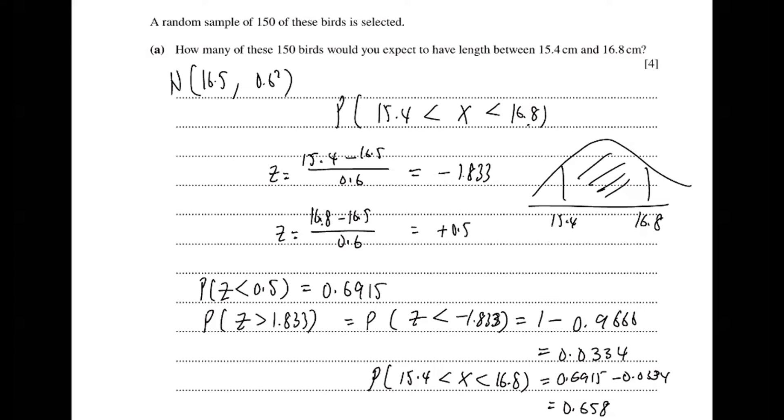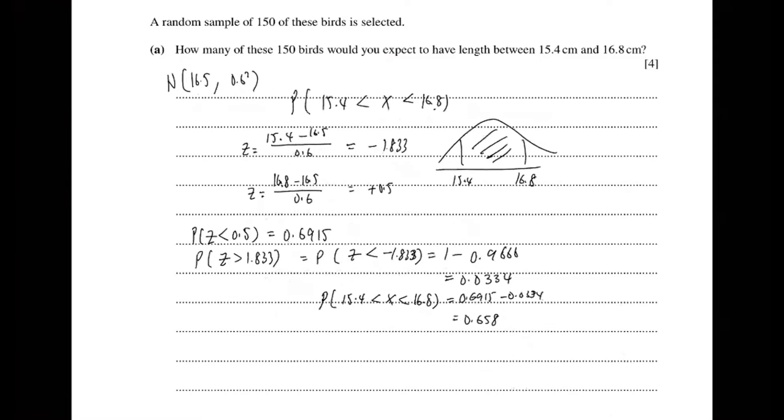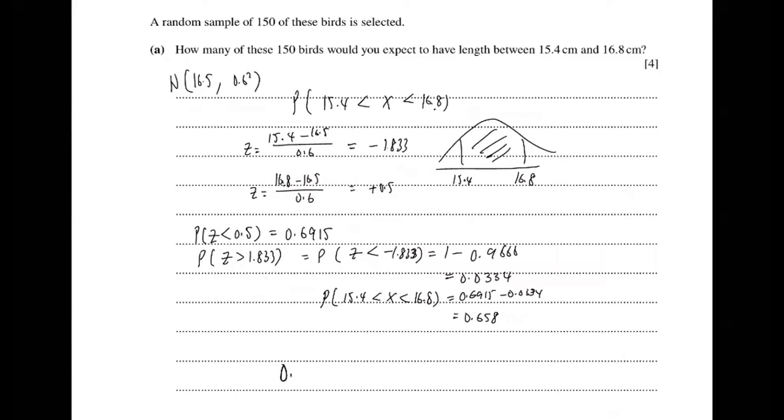Don't forget to multiply the 150. So you need to multiply the 150 first. So you'll get 0.658 times 150. So the answer will be 98.7. We're looking for birds, right? We can write 98.7 or we can write 99, either one.